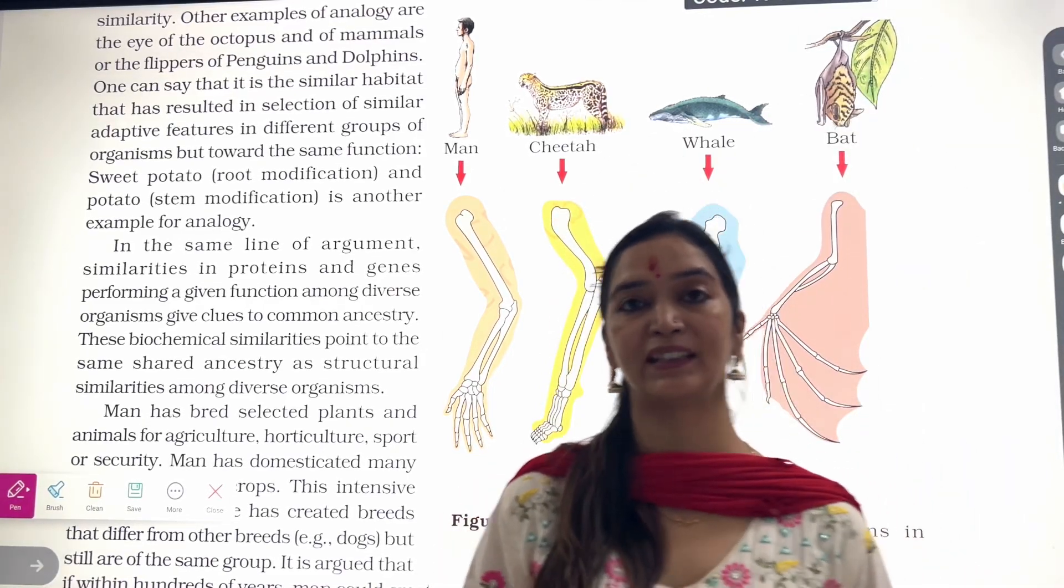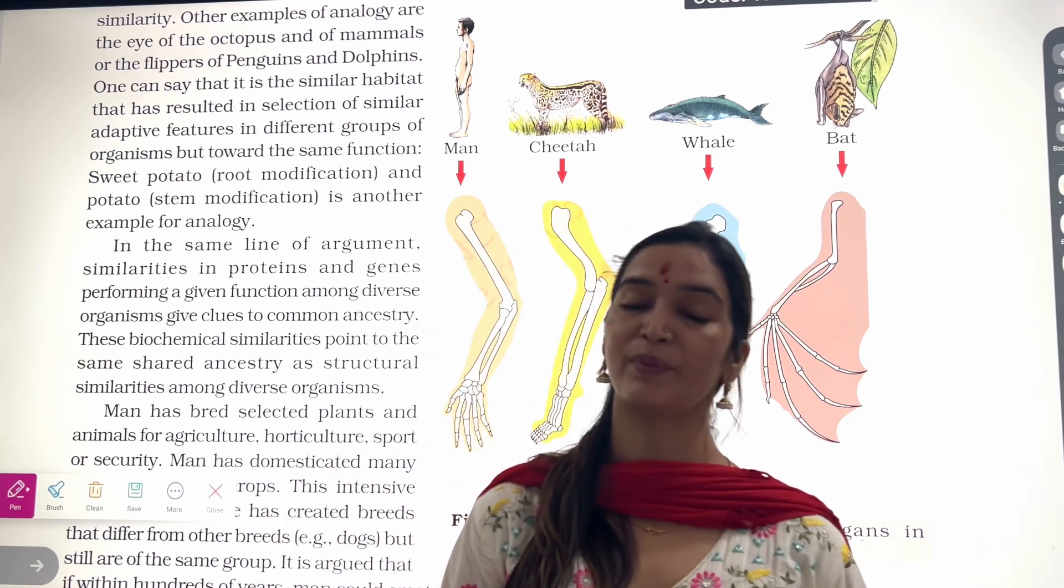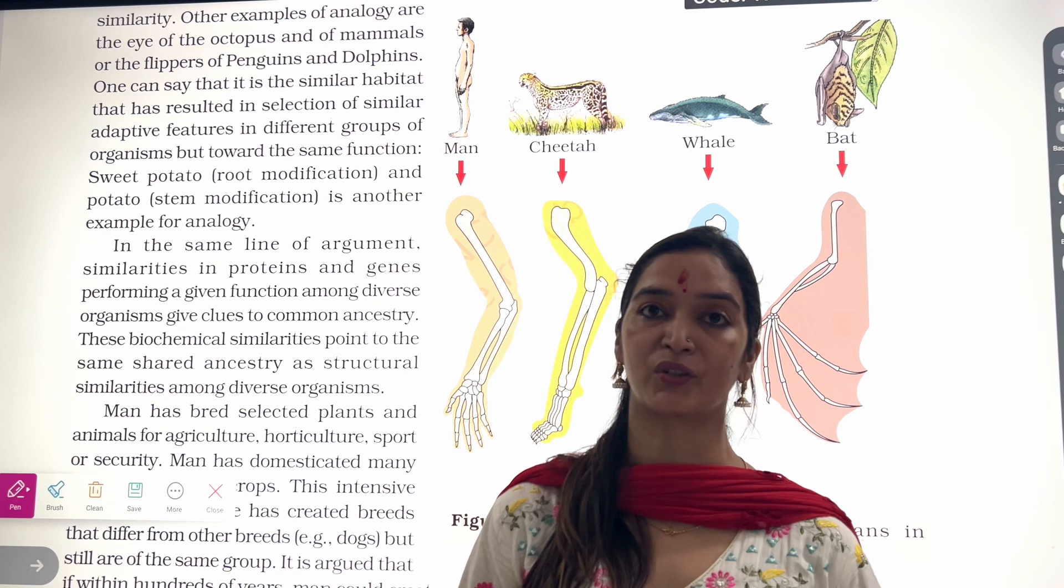Hello students, today we will talk about homologous organs. The organs that have same structure but different function are called homologous organs.